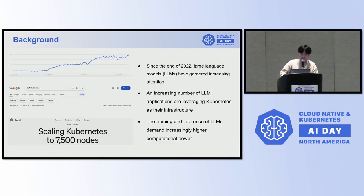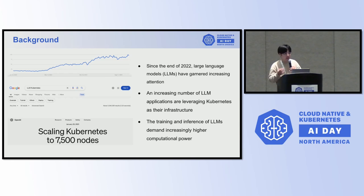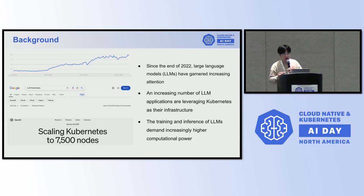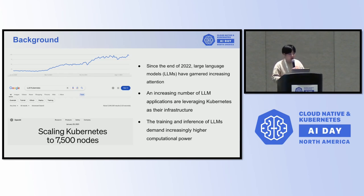I will give an introduction of the background and the Catalyst project. Since the end of 2022, large language models have earned increasing attention. If you search for LLM and Kubernetes together on Google, you will find millions of results. This indicates that an increasing number of LLM applications are leveraging Kubernetes as their infrastructure. Also, in 2021, OpenAI expanded its Kubernetes cluster to 7,500 nodes, which further shows that training and inference of LLMs demands increasingly higher computational power.